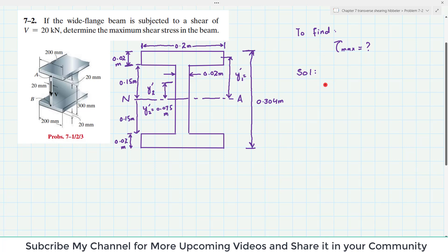As we know that maximum shearing stress in the beam is equal to V into Q max divided by I into T. Simply the formula is tau equals V into Q divided by I into T. But for maximum shearing stress, it is equal to V into Q max divided by I into T.